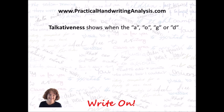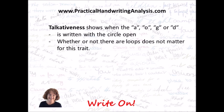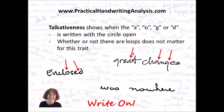Talkativeness shows when the A, O, G, or D is written with the circle open. Whether or not there are loops doesn't matter for this trait — it only matters if the circle letters are open or closed. Examples shown include an E and a D left open, two A's and a G left open, and an A and an O left open. Circle letters left open indicate talkativeness.